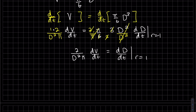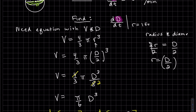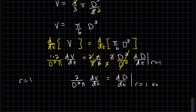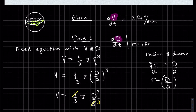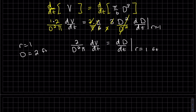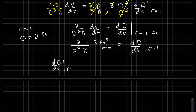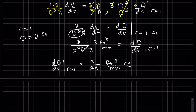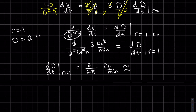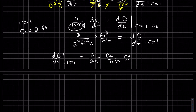Now we plug in at the instant when the radius is one foot. If the radius is 1, then the diameter is 2. We also have dV/dt = 3 feet cubed per minute. You can track units — feet cubed per minute divided by feet squared leaves feet per minute — which confirms we're on the right track.